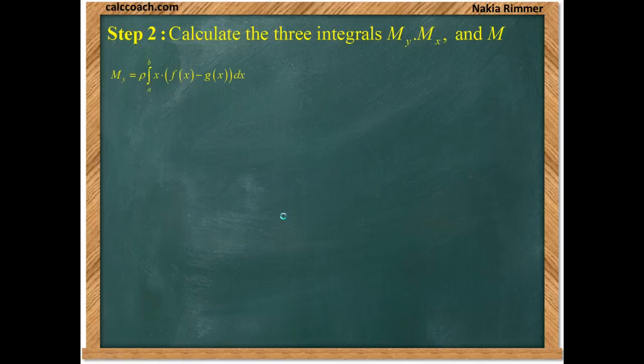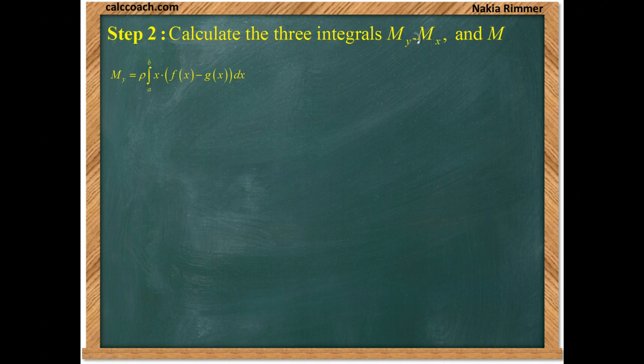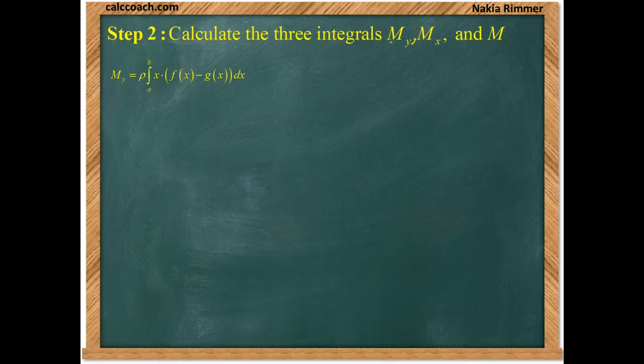First up is the y moment. The moment about the y-axis. The likelihood of the system to rotate about the y-axis. We have the formula from the cheat sheet. f of x is going to be replaced by 4. g of x is going to be replaced by x squared over 4. But don't forget, there's an x multiplied by that. And our limits of integration will be from 0 to 4.